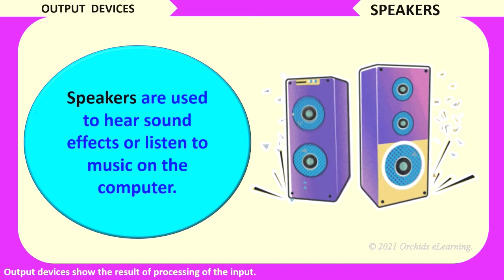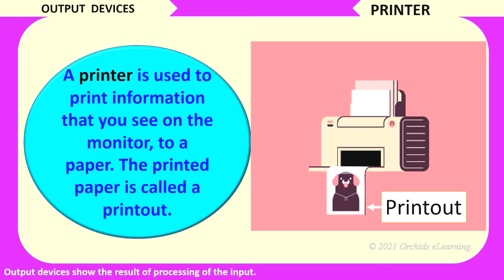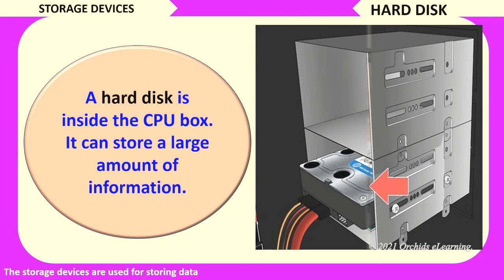Printer. A printer is used to print information that you see on the monitor to paper. The printed paper is called a printout. Hard disk. A hard disk is inside the CPU box. It can store a large amount of information.